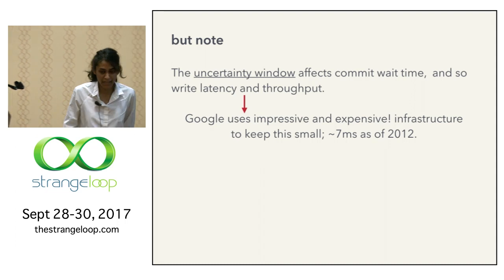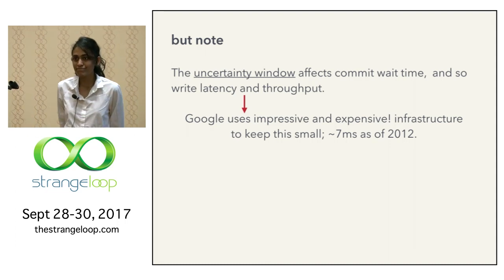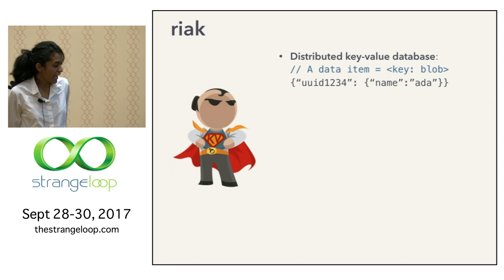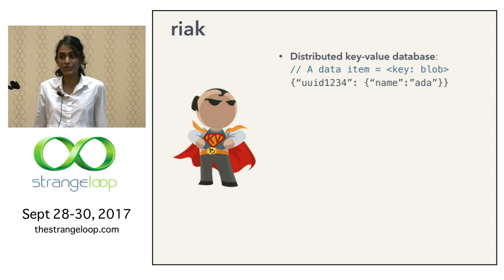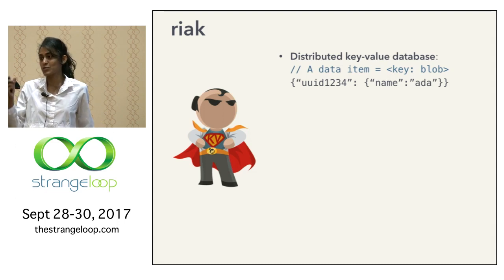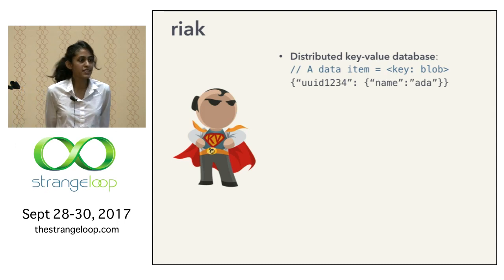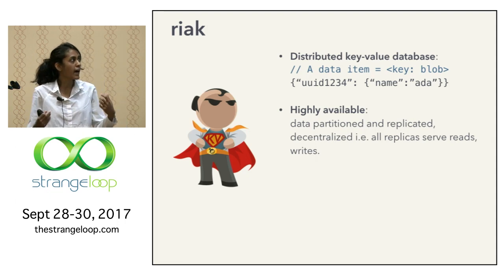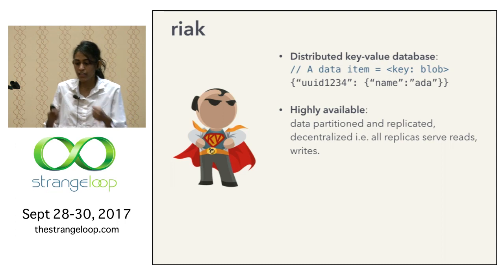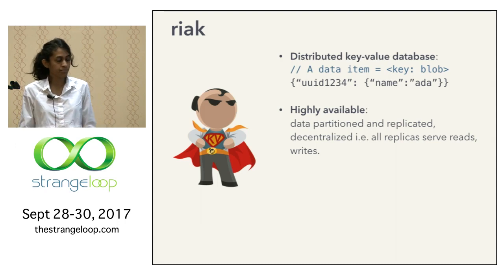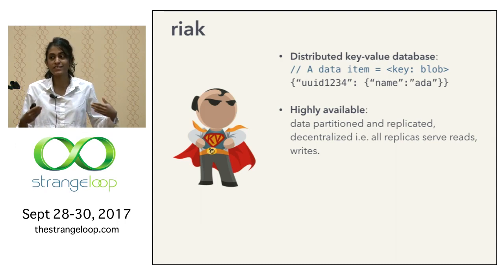Now let's hop over to the other side of the CAP theorem fence and talk about a weakly consistent store: Riak. Riak is a distributed key-value store — it does not support complex schemas, it just maps a key to a blob, and it doesn't have the notion of multi-key transactions. Riak chooses first and foremost to be a highly available data store — it prioritizes being available and able to perform reads and writes over everything else. That's an important design consideration.